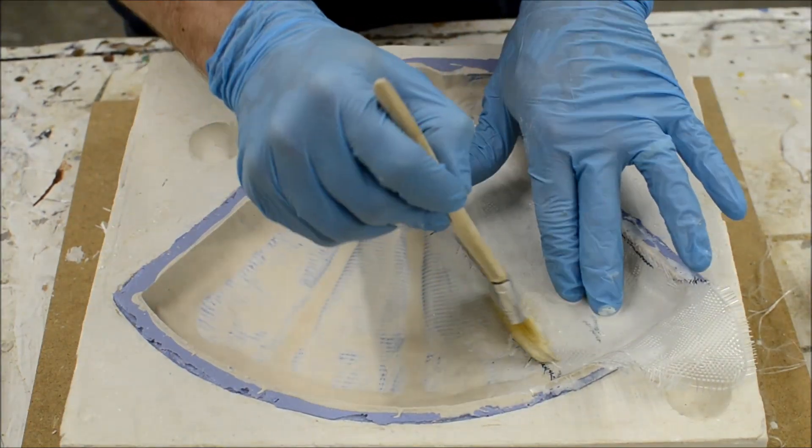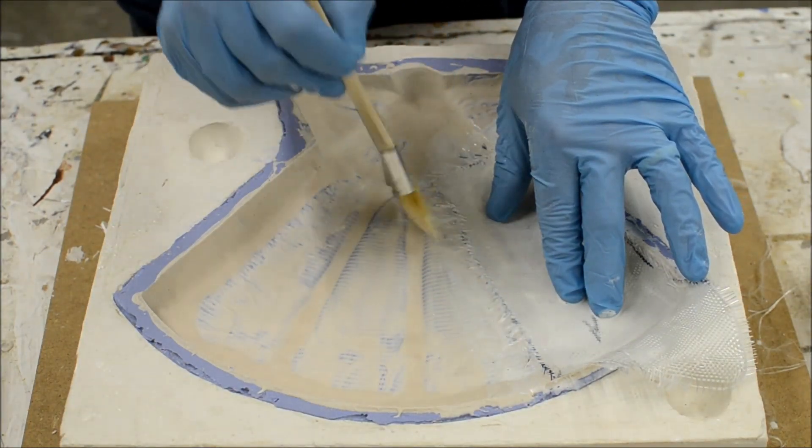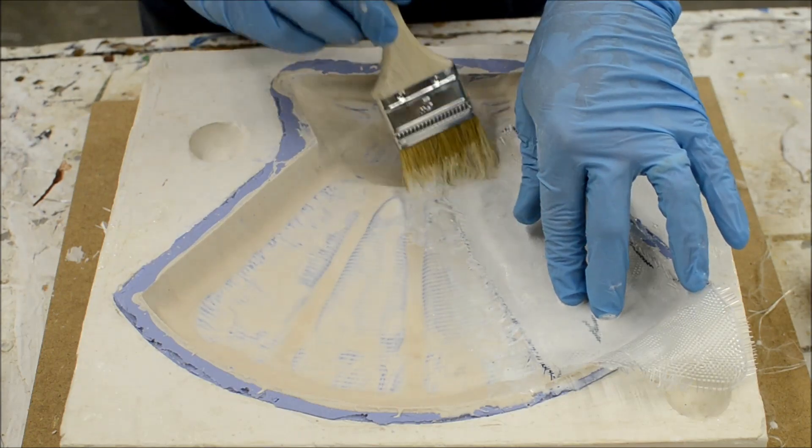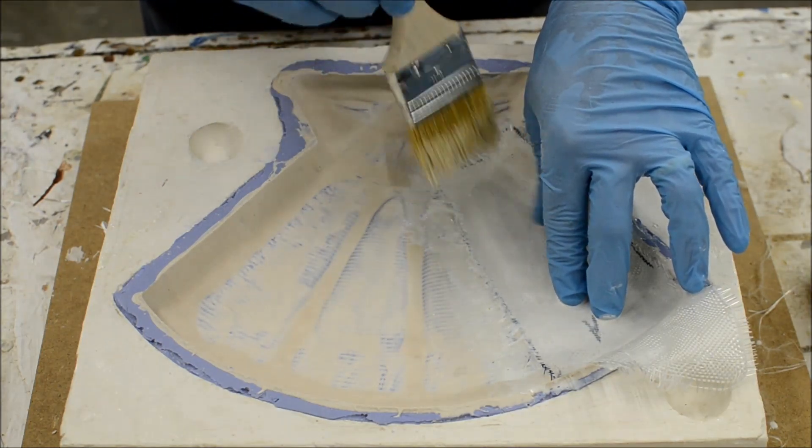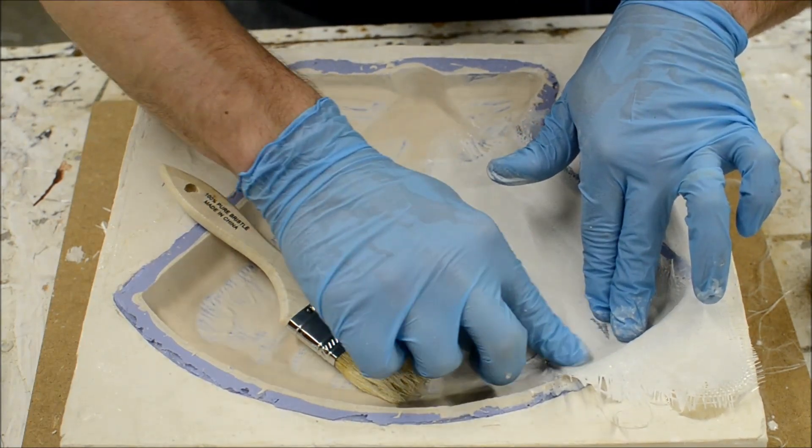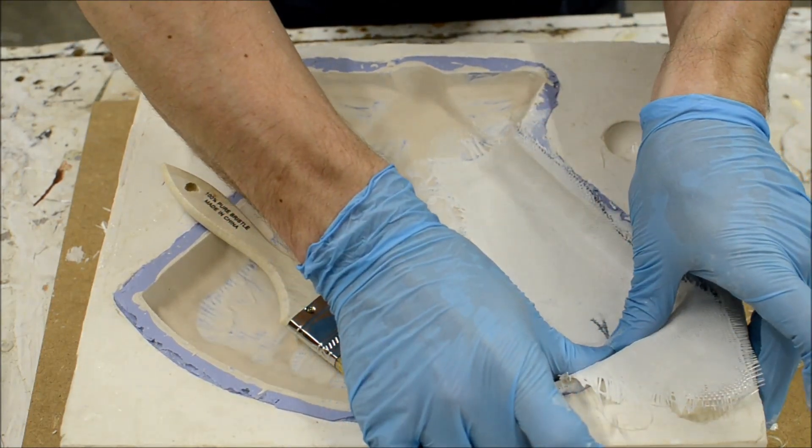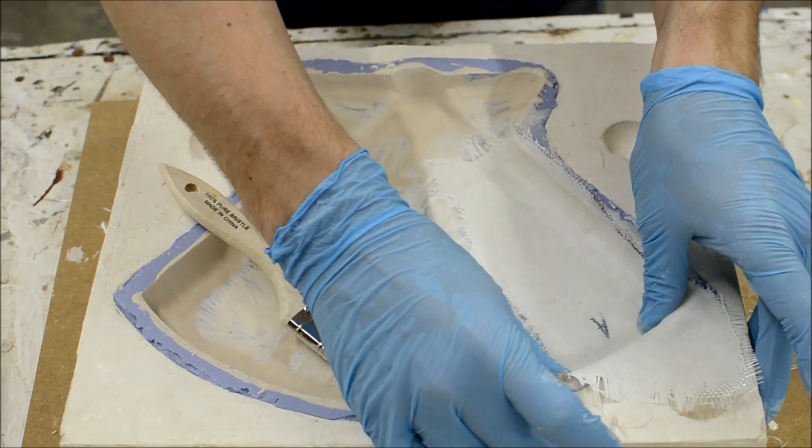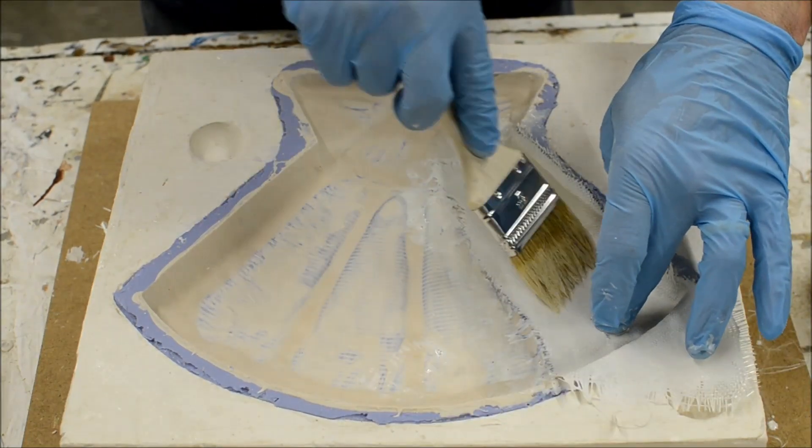Brush or roll more resin over the surface of all the cloth until it is fully saturated. Press out any air bubbles that get trapped under the cloth. A dry, stiffened brush can be helpful for this task. For larger areas, use a roller.